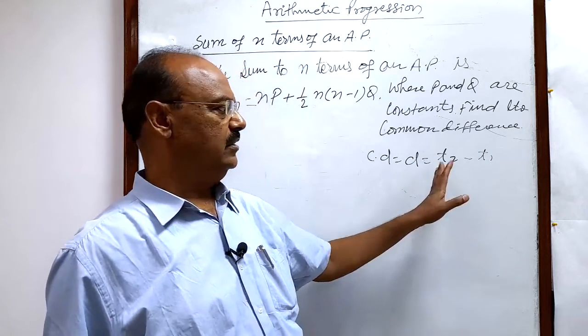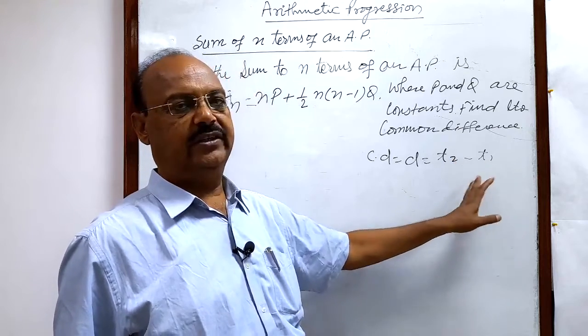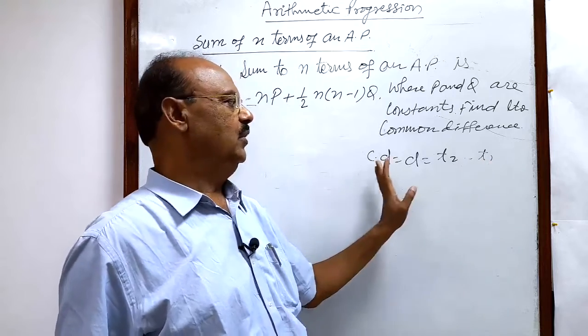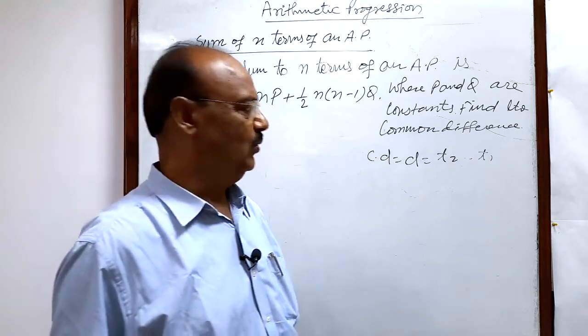So we will try to get these two terms, first and second terms, and by getting the difference of these two terms, t2 minus t1, we will get the common difference, that will be our answer.